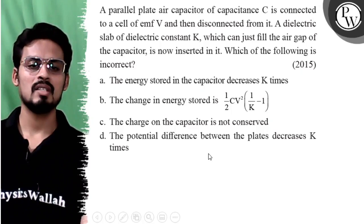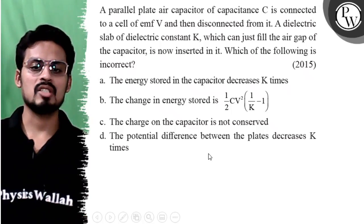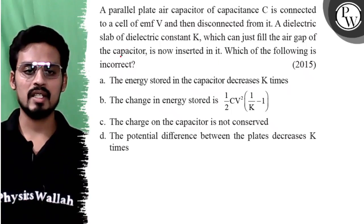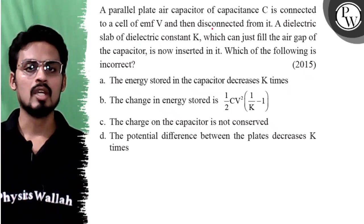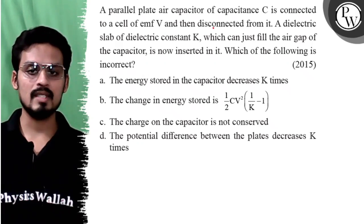Hello, let's see this question. A parallel plate air capacitor of capacitance C is connected to a cell of EMF V and then disconnected from it. So first it is charged to a potential of V and then disconnected.